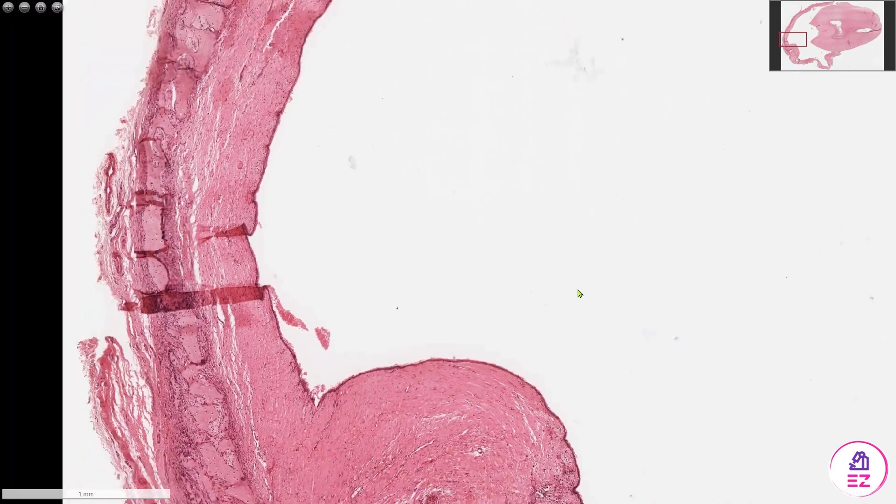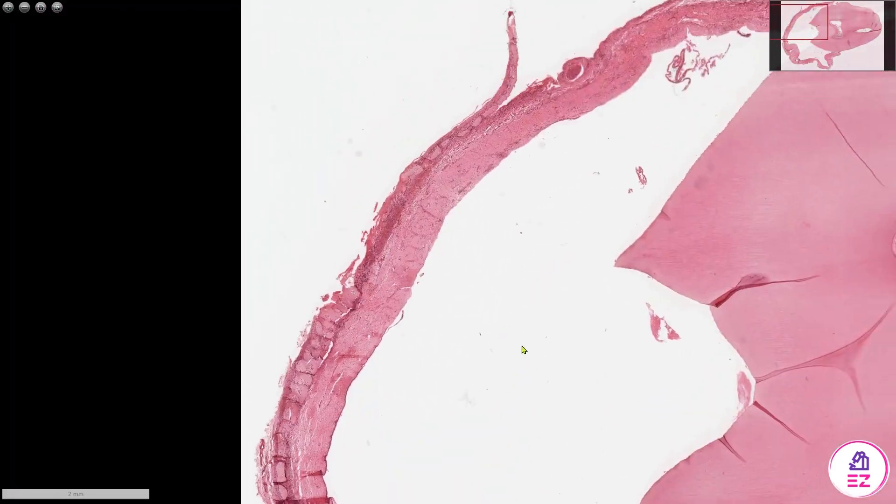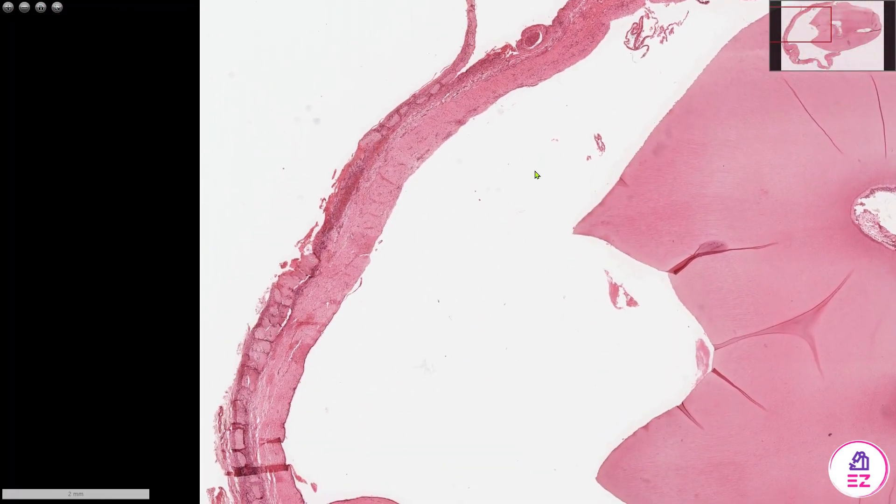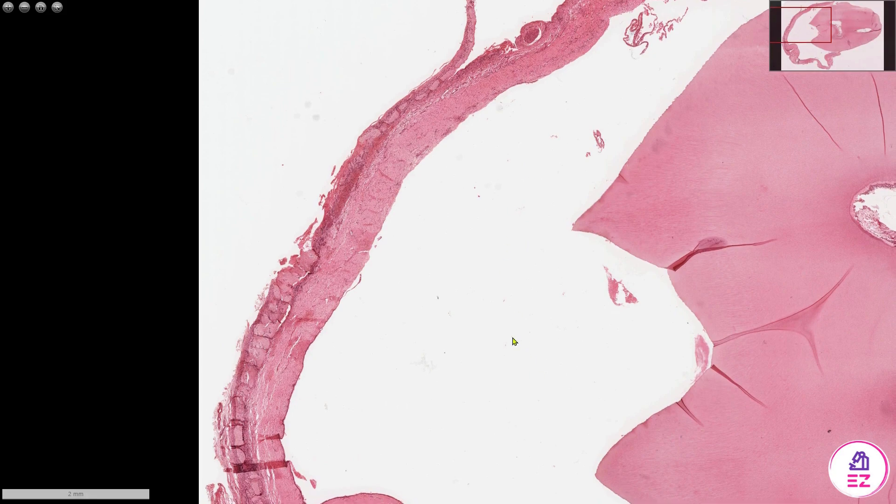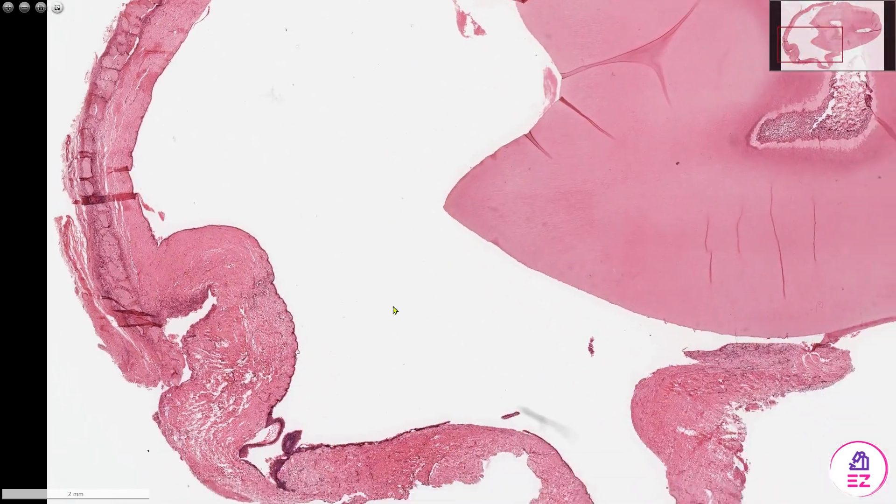And then the lumen, in this case, is virtually empty of any material. So again, in contrast to the radicular cyst, I'm not seeing lots of inflammation, cholesterol crystals, anything like that. This would have probably been filled with some form of fluid.